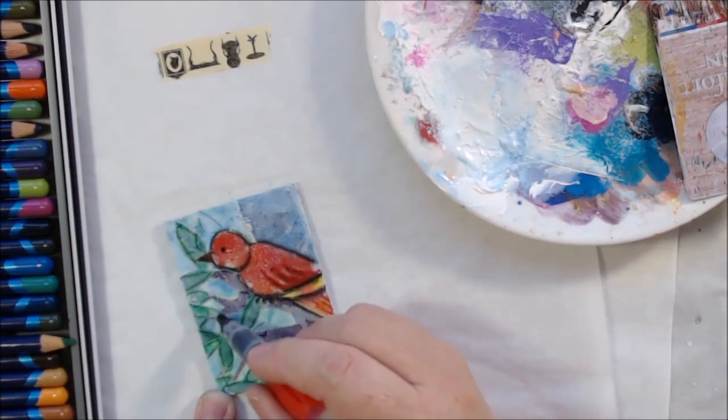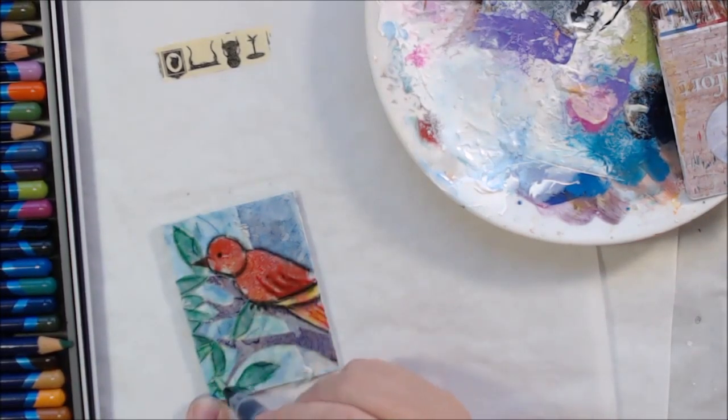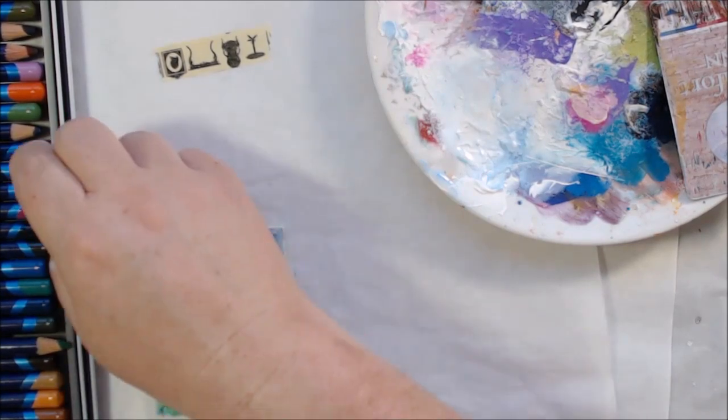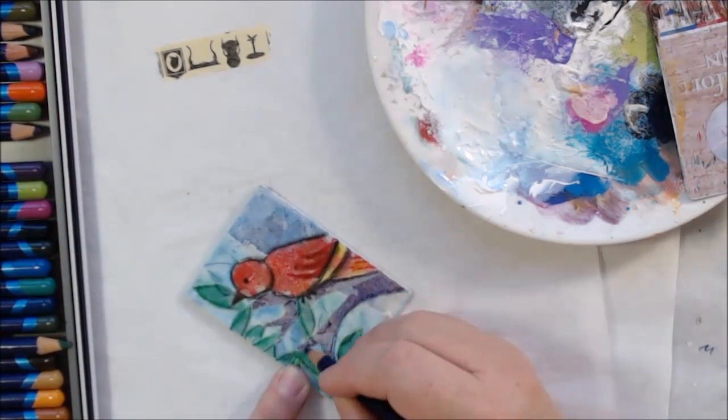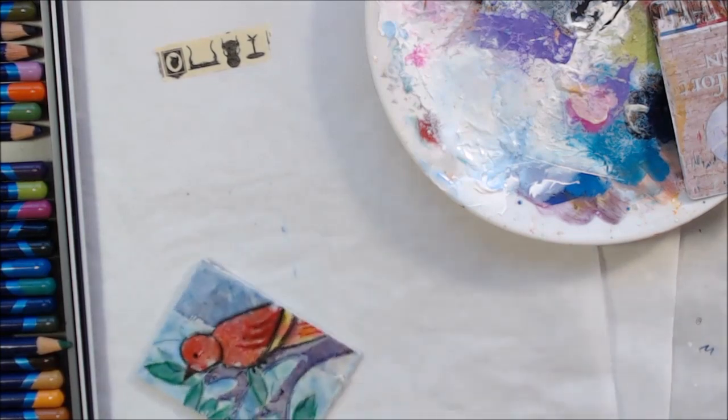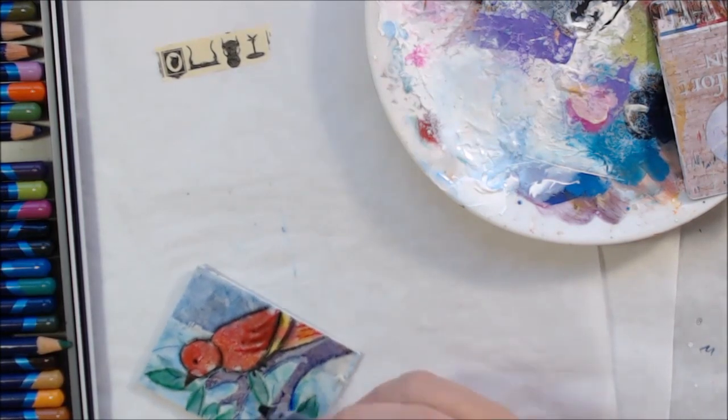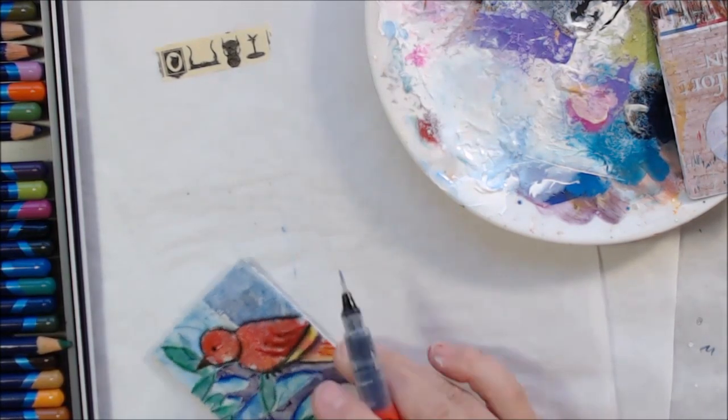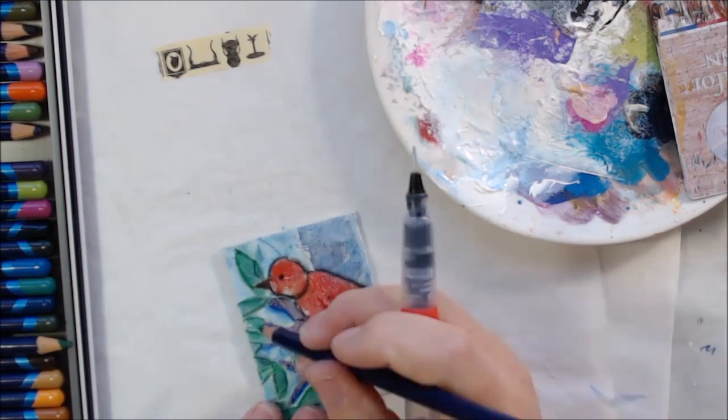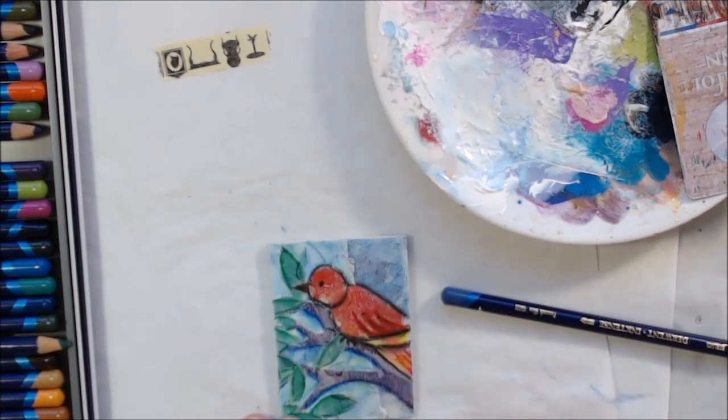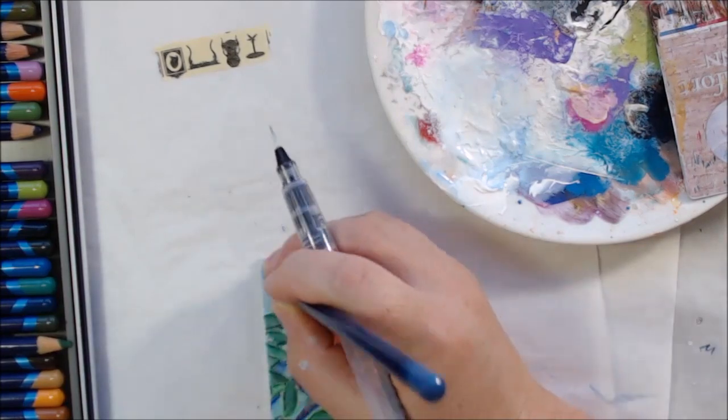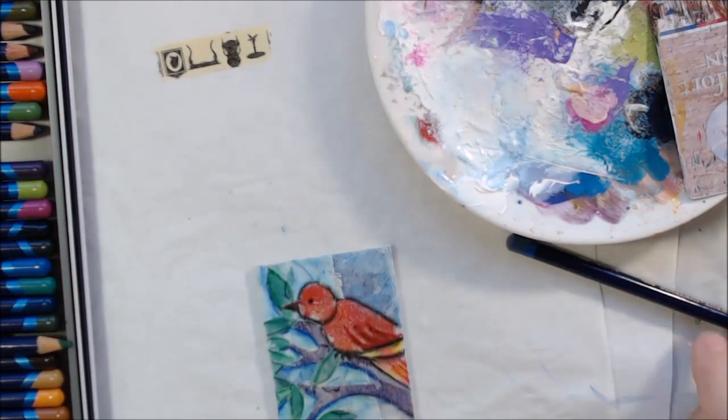But I got out my Inktense pencils in order to add my details. So I added some red to the bird to kind of indicate where there might be some feather lines, and then I added some green around the leaves and then some blue shadow underneath the branches, you know, stuff like that that you would do with a paper project.